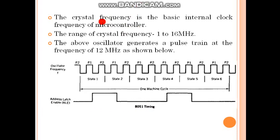Here is the diagram of oscillator frequency showing P2, P1 signals and states 1 through state 6. After that, ALP is here - ALP is the address latch enable. With 8051 timing circuit, this is also available.